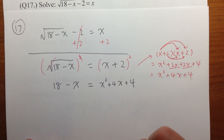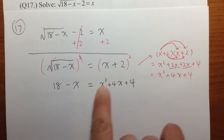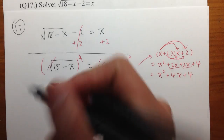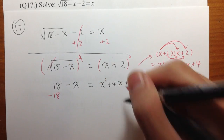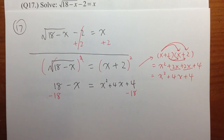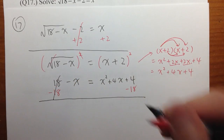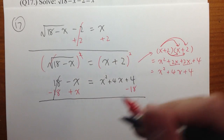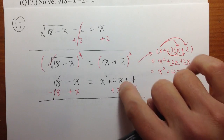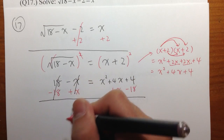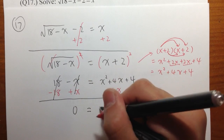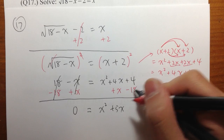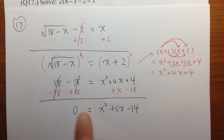So the strategy is to make one side equal to 0, and you want to keep the x squared positive. I want to move these things to the right-hand side. Let me minus 18 here, and subtract 18 from the 4. That's 0. Then I have a negative x — let me add x on both sides. So altogether, the left-hand side is 0, equals x squared. 4x plus x is plus 5x. 4 minus 18 is negative 14.